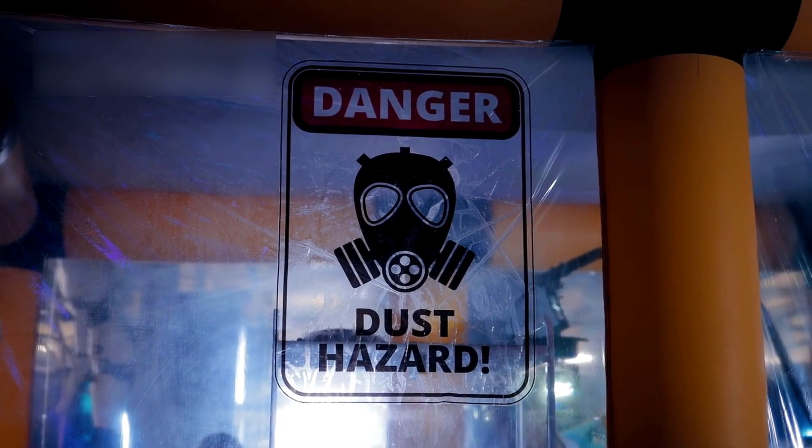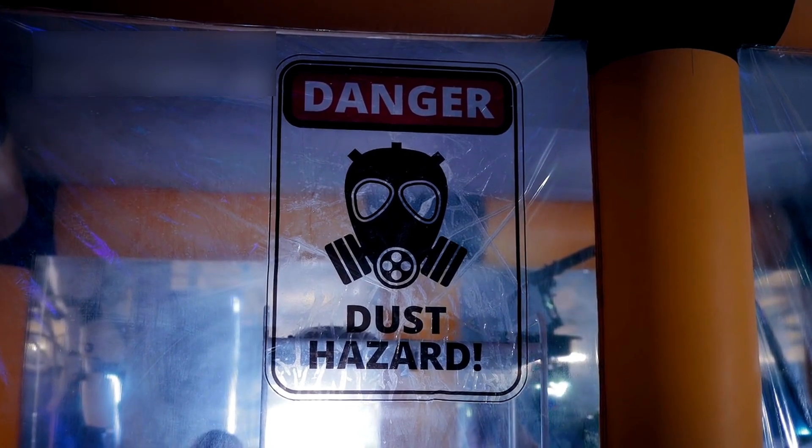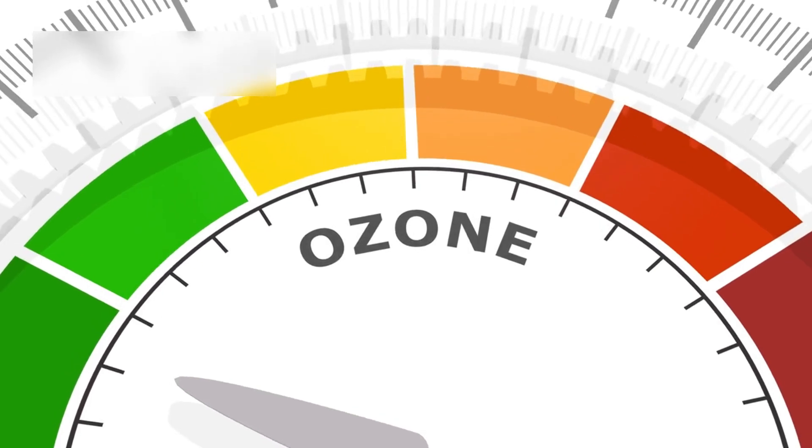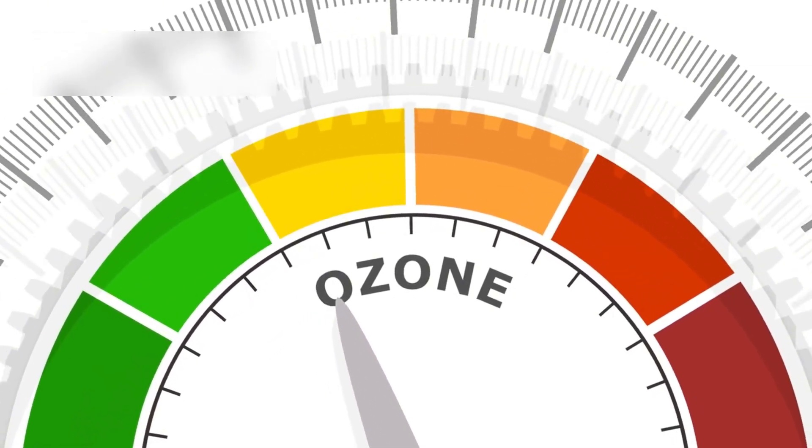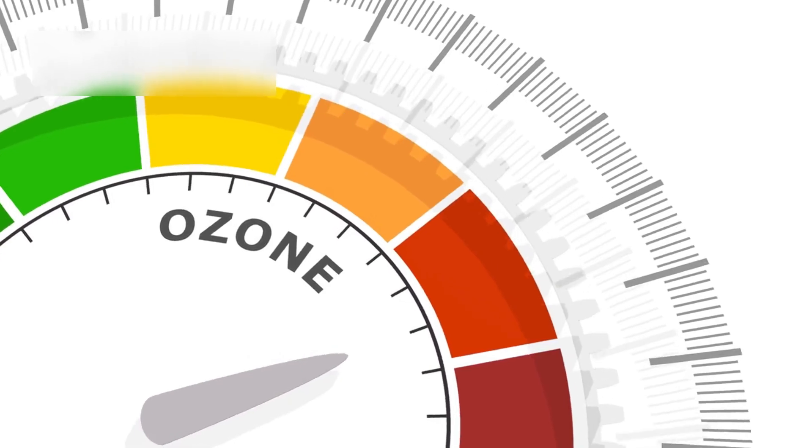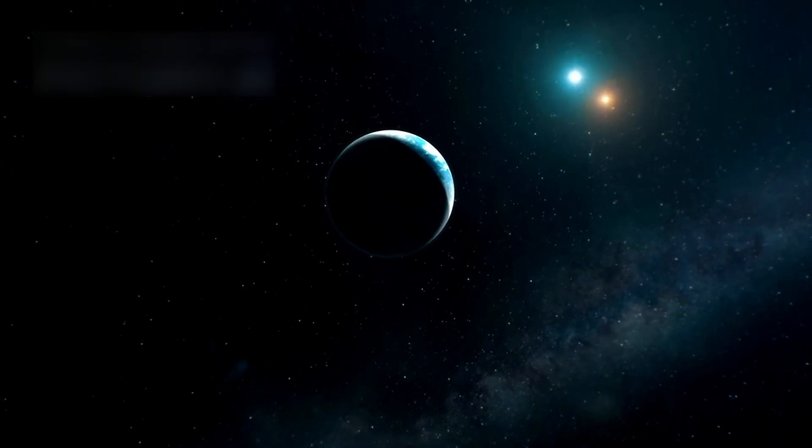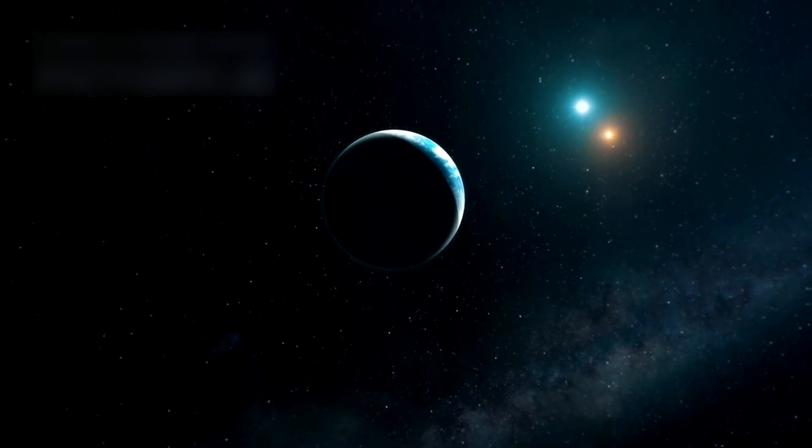Scientists are planning multiple follow-up missions to confirm these early findings. Teams are particularly eager to verify the presence of DMS on K2-18b and to search for combinations of ozone, ammonia, and nitrogen compounds. These chemicals, when found together, could build a compelling case for biological activity.